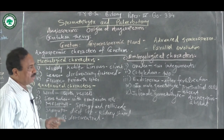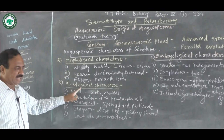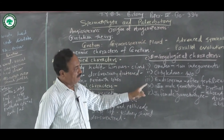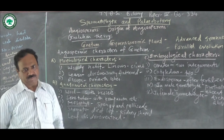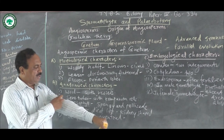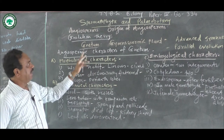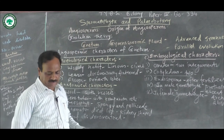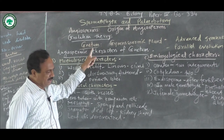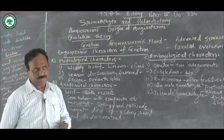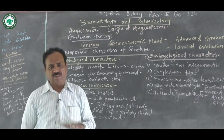So if we observe these morphological, anatomical, and embryological characters, we conclude that this Netum shows many similarities with the angiosperms. On the basis of the similarities found in Netum and angiospermic plants, it is suggested by many paleobotanists that from the Netum the angiosperms have been developed, and that's why Netum is suggested as the probable ancestor of the angiosperm.